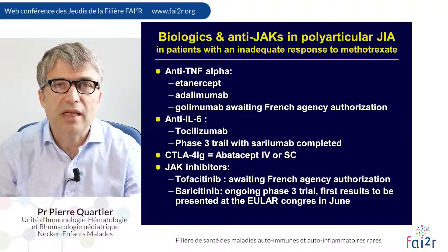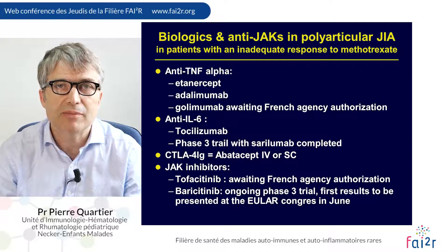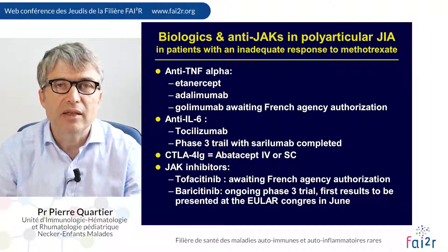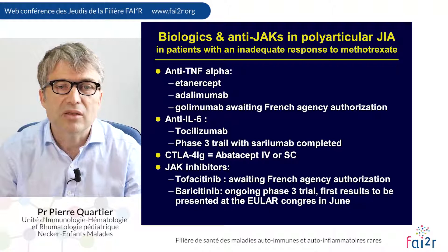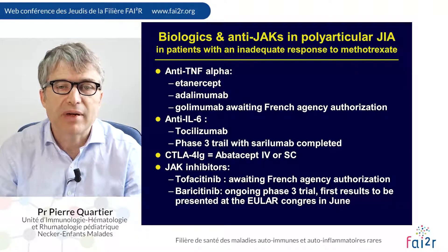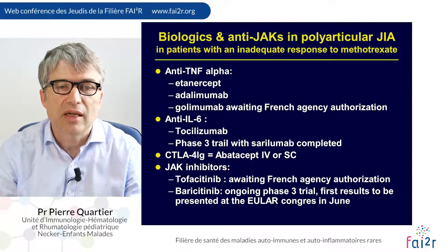In patients with polyarticular JIA who do not respond well to or are intolerant to methotrexate, there are now seven options. Golimumab is awaiting authorization in France. We have tocilizumab IV and subcutaneous, and should soon have sarilumab as well. Abatacept IV and subcutaneous are available. Tofacitinib is awaiting French authorization, and baricitinib is to be presented at the EMA with the first results of a phase III trial.